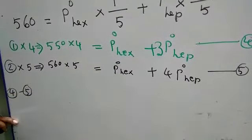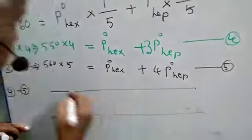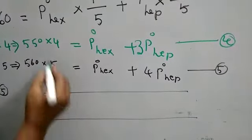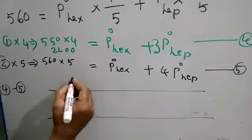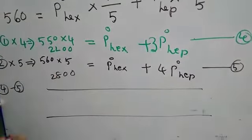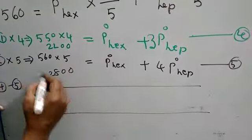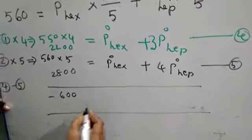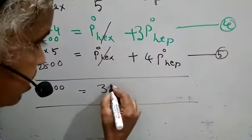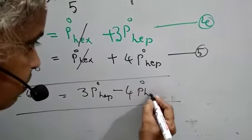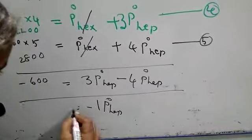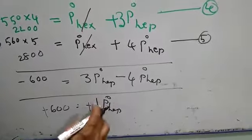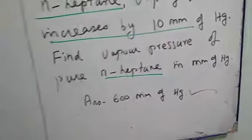Now I am doing equation 5 subtracted from 4. On multiplication, this value: 5 times 22, 5 times 20 plus 2 is 22. For this the value is 2800. This I am subtracting 5 from 4. So that means here I am having minus 600 equals - here it is getting cancelled - and 3 P naught heptane minus 4 P naught heptane. So now on changing the sign, minus 1 P naught heptane equals minus 600. Changing the sign, P naught of heptane equals 600, that is your answer. They are asking n-heptane, your answer is 600 millimeter of mercury.